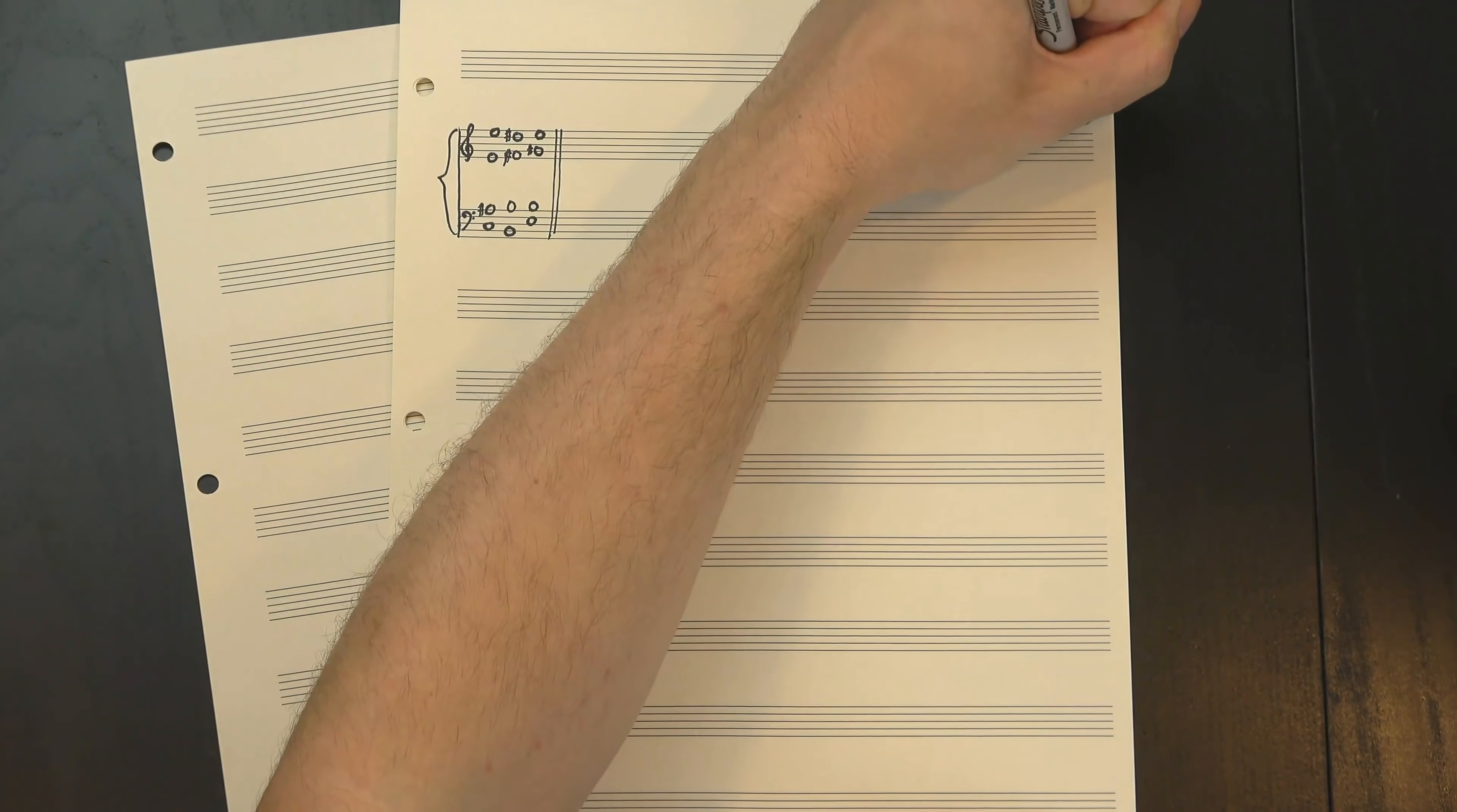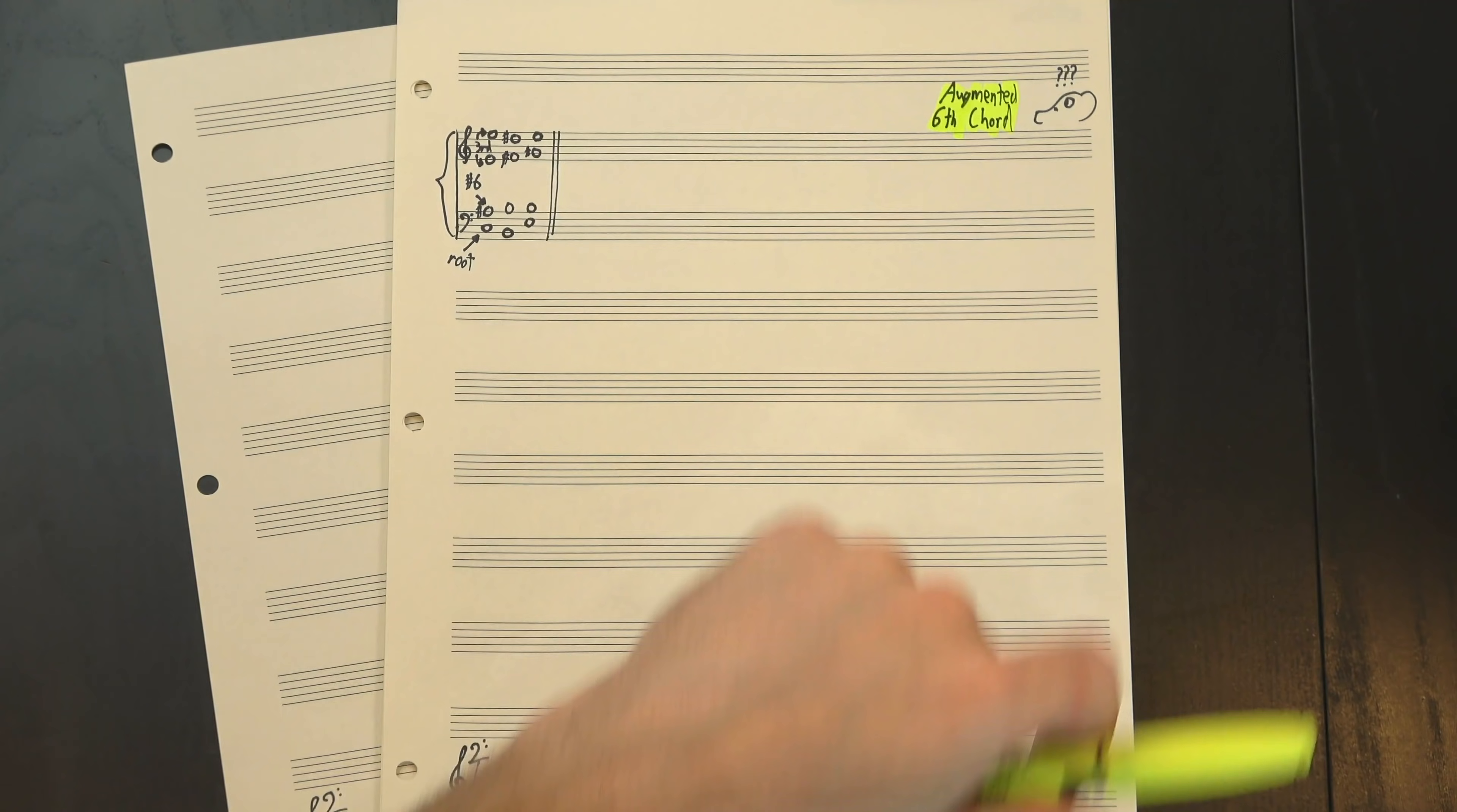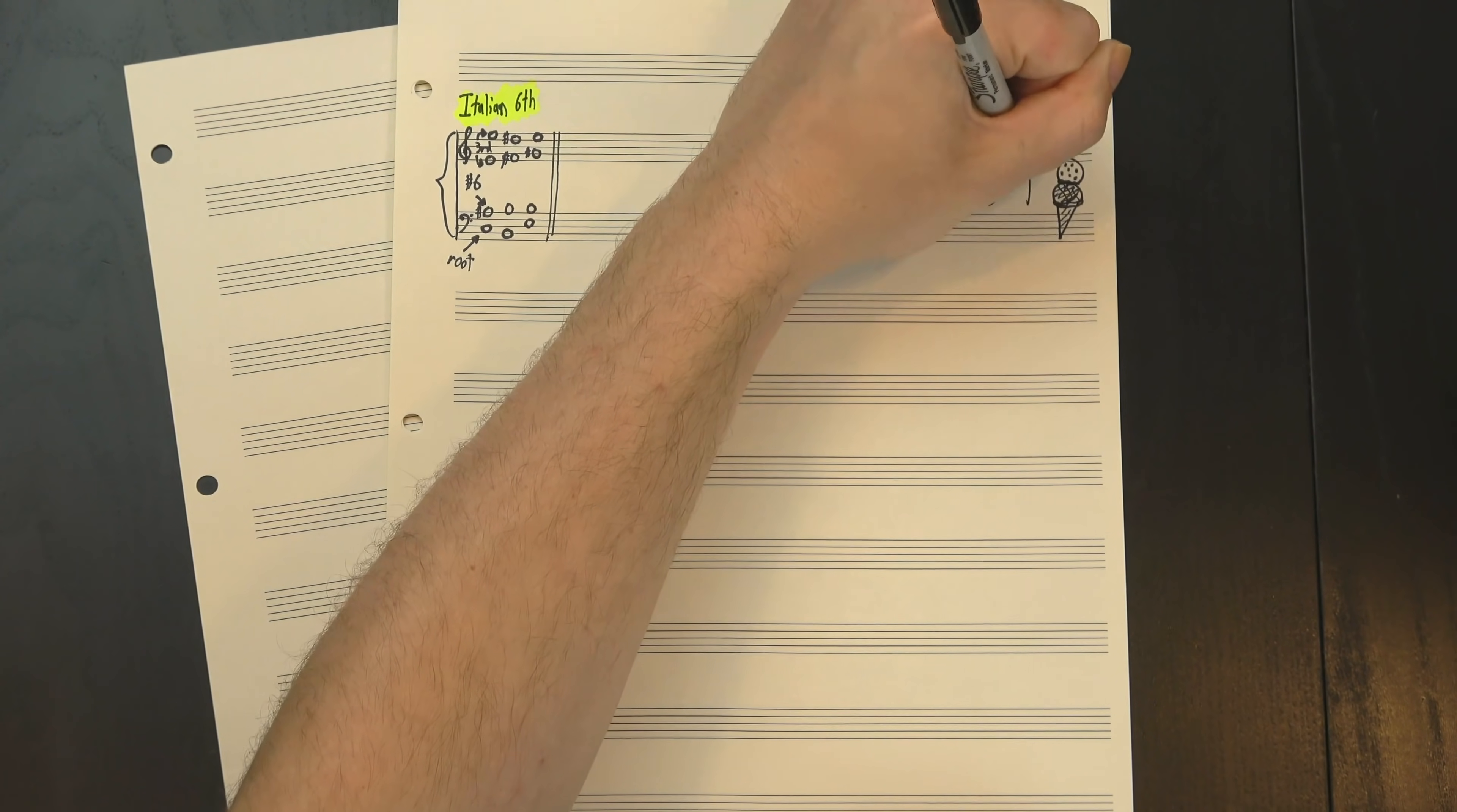Now that we have our notes, what chord did we actually make? Well, if we assume the bass is the root, then we've got some major thirds here and here, and an augmented sixth here, which is why this is called an augmented sixth chord. Specifically, this is the Italian sixth.